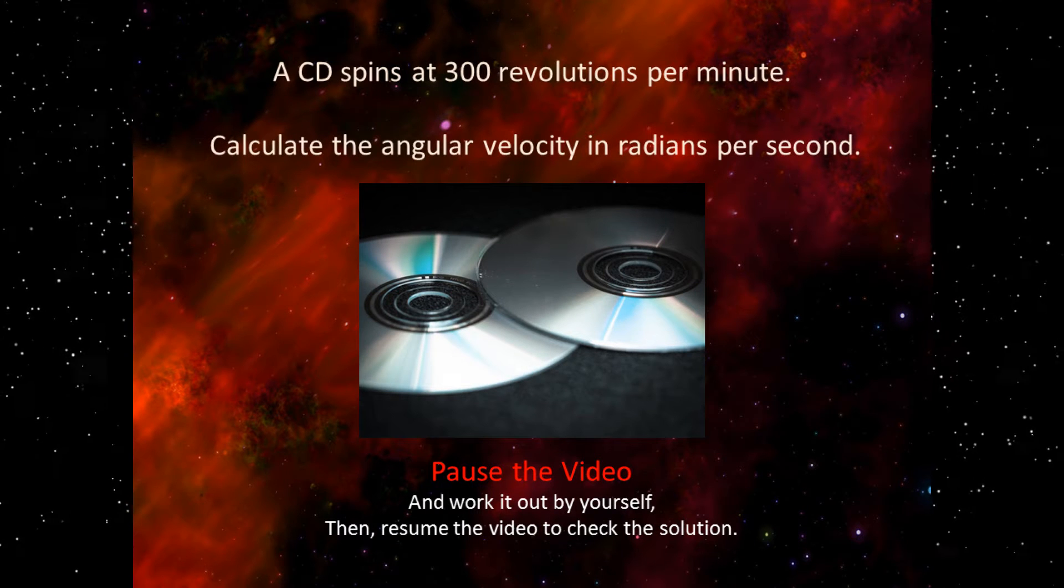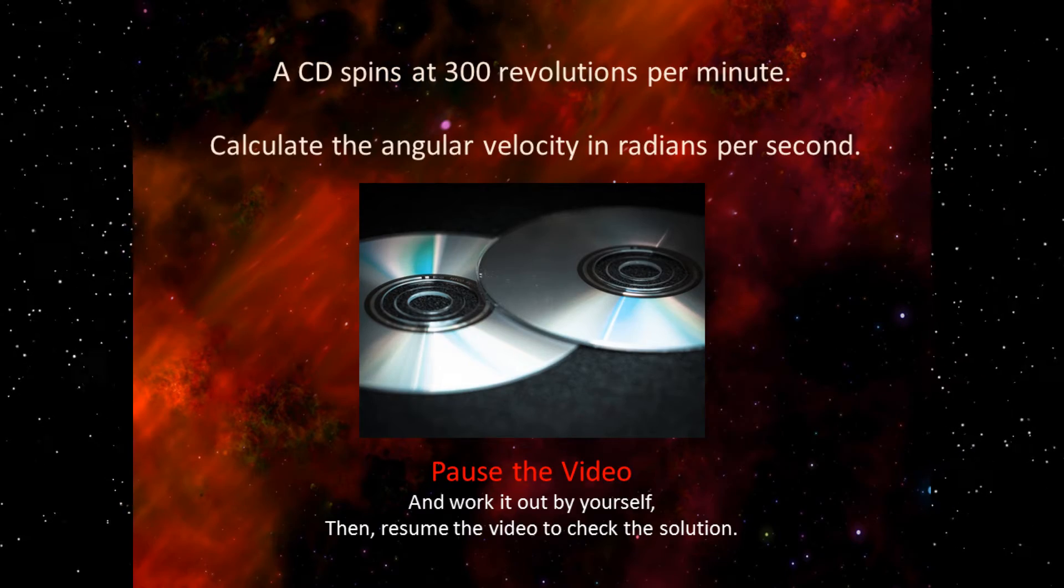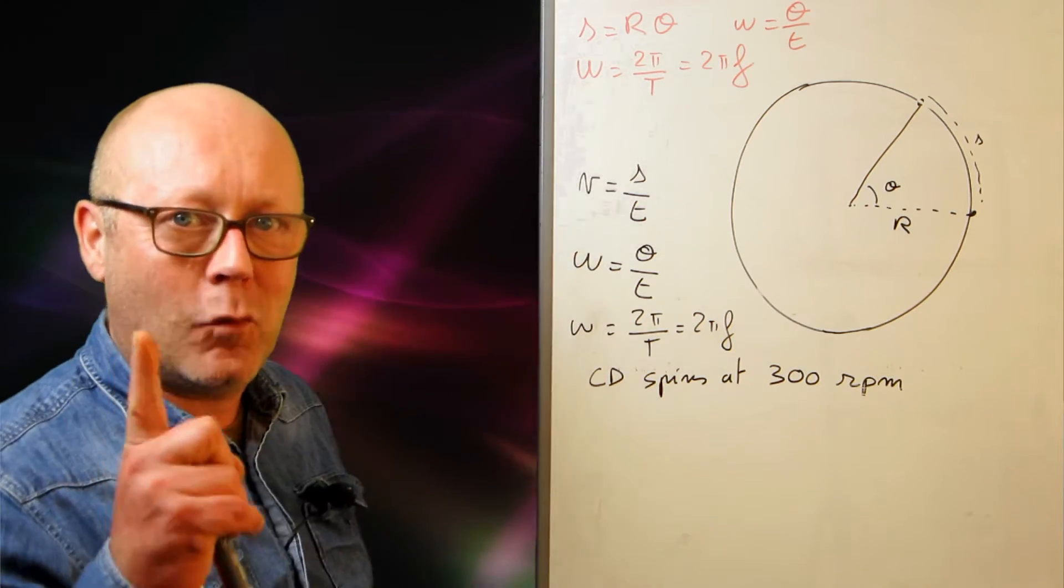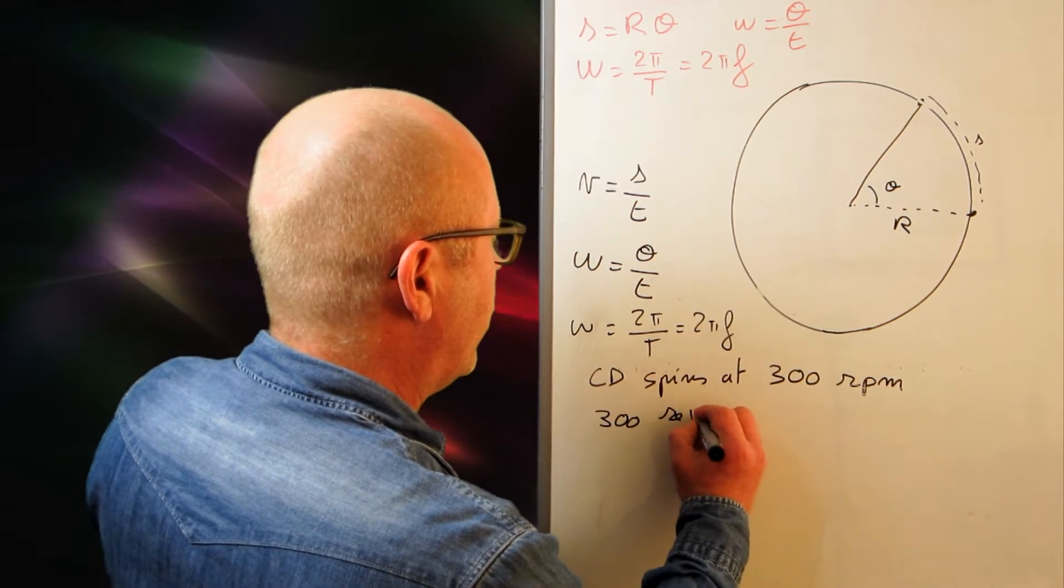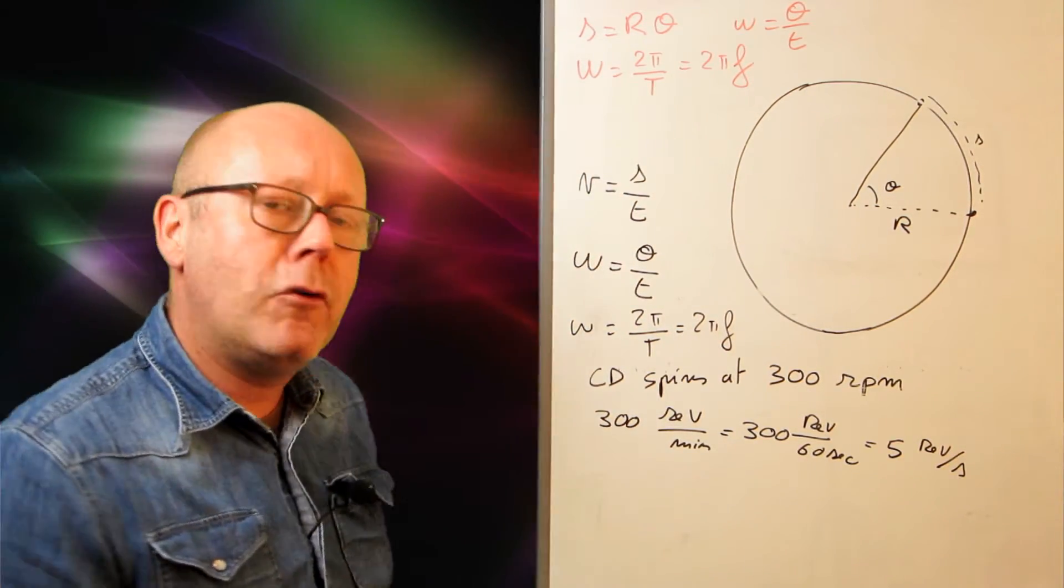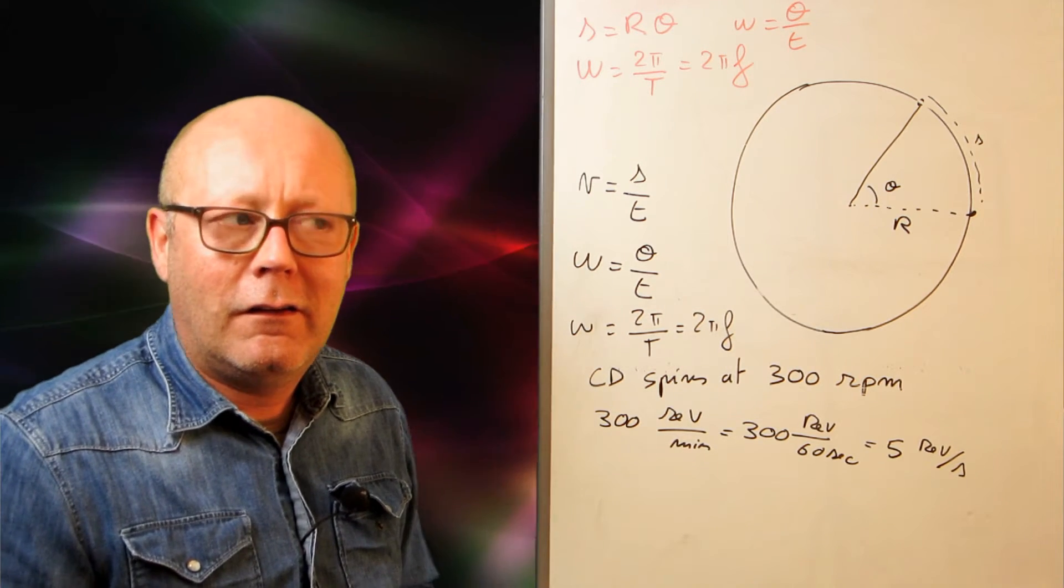Let's do an exercise. So the CD is spinning at 300 revolutions per minute. RPM means revolutions per minute. What is a revolution? Well, it's a cycle. It's going all around the circle. It's one revolution. So 300 revolutions per minute. Revolutions per minute is actually equal to 300 revolutions in 60 seconds. So that gives you 5 revolutions per second. Well, 5 revolutions per second is 5 cycles per second. That's a definition of the frequency. So I've got f equals 5 hertz.